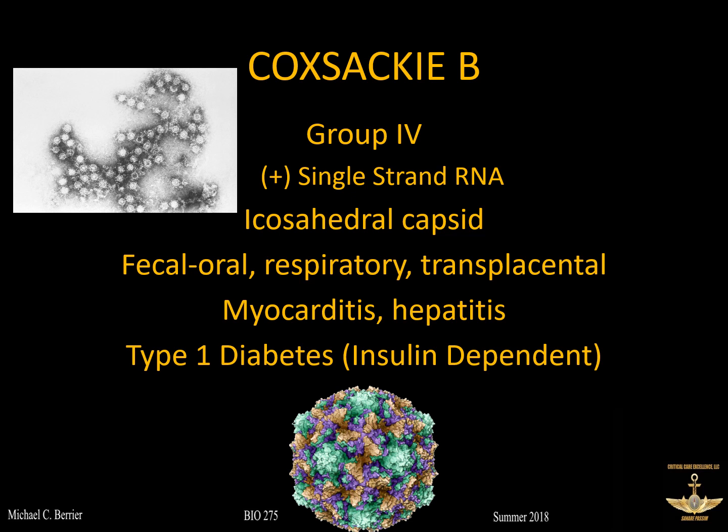Primary transmission of Coxsackie B is by the fecal-oral route, respiratory, and transplacental. We'll talk more about transmission from mom to baby and how that increases the likelihood, at least theoretically, of type 1 diabetes.